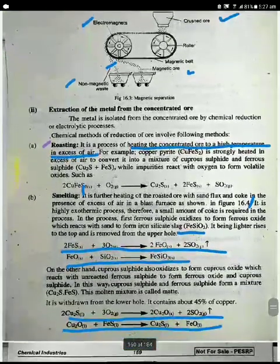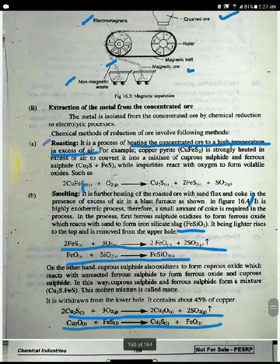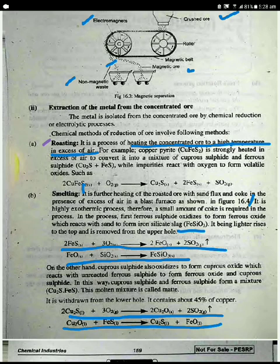The second step is extraction of the metal from the concentrated ore. When we clean the ore, how do we remove the metal from it? We have three steps. Number one, roasting.